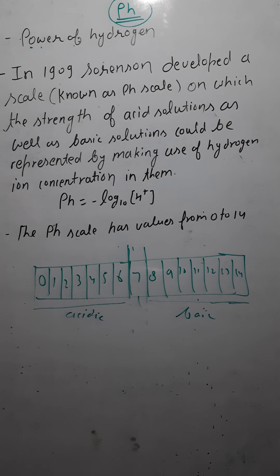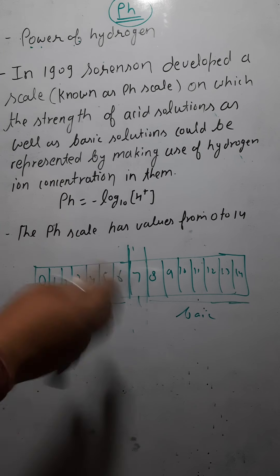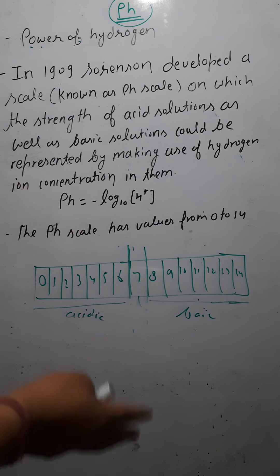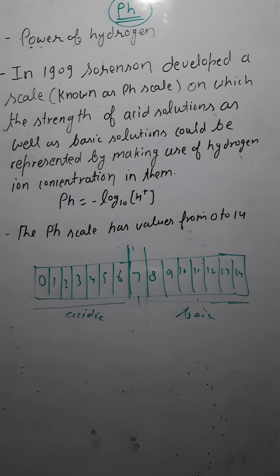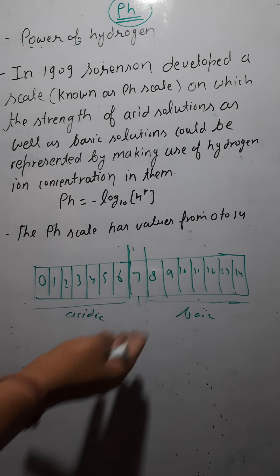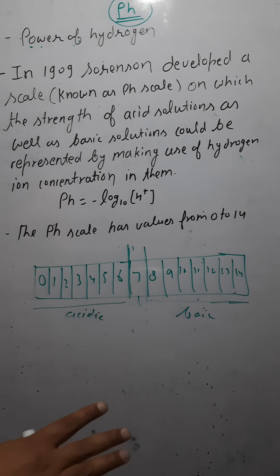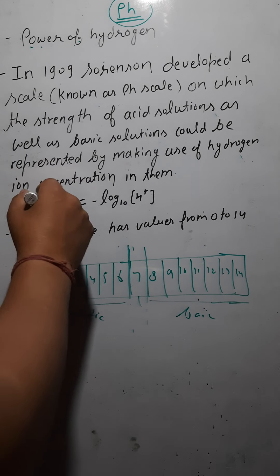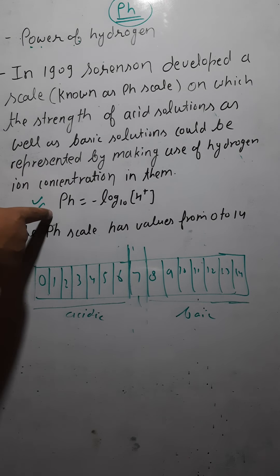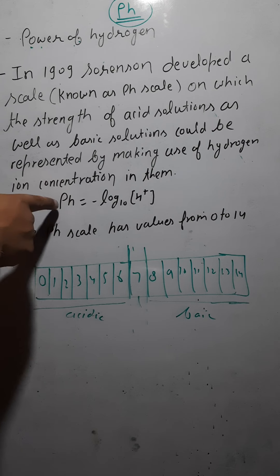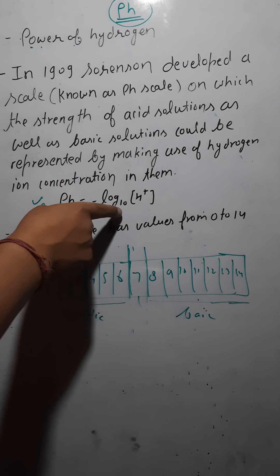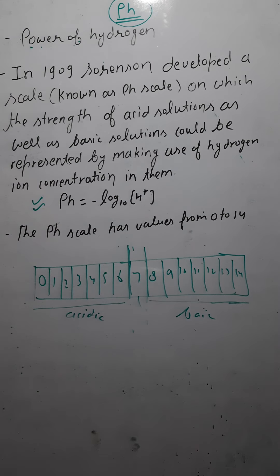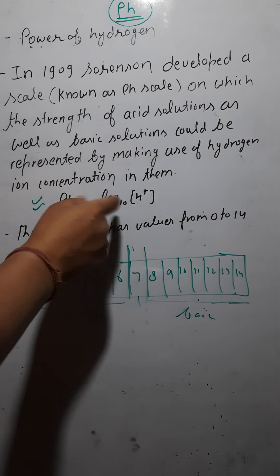This scale was developed by Sorensen in 1909. Based on this scale we can find out whether a given solution is acidic or basic. Sorensen also gave a formula for finding out pH: pH = −log₁₀[H⁺], where [H⁺] is the concentration of hydrogen ions in the solution.